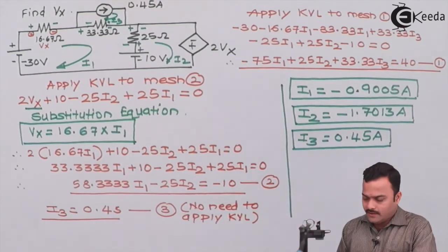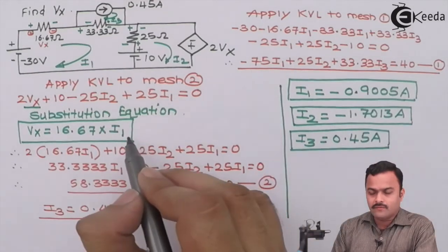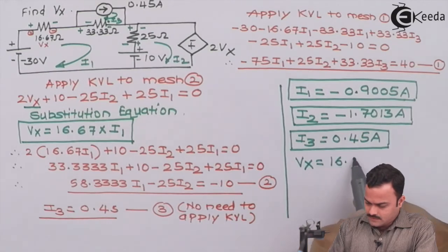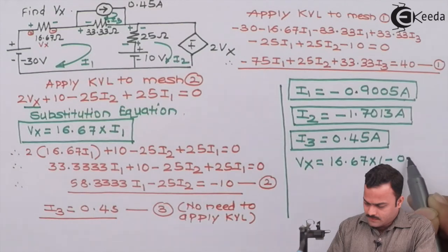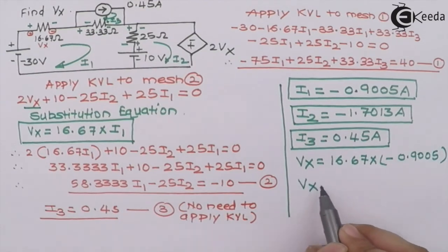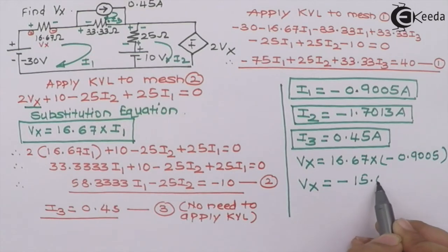Remember we have to get the value of vx. So simply by substituting the value of i1 we will get vx which is 16.67 multiplied by minus 0.9005. So finally vx will get as minus 15.0113 volt.